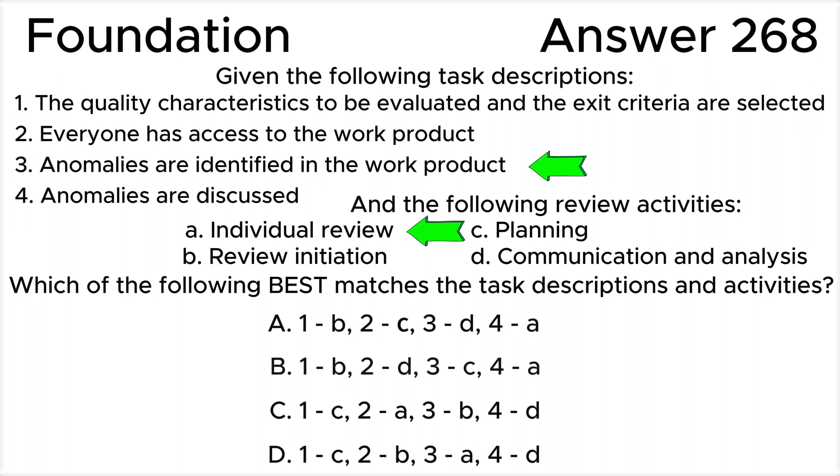Task 4: Anomalies are discussed corresponds to review activity D, Communication and Analysis. During the communication and analysis, reviewers are analyzing and discussing each anomaly, determining its status, ownership, and required actions, and making review decisions, normally in a meeting. This could include determining the need for a follow-up review.